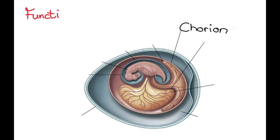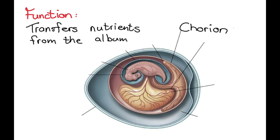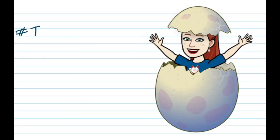And then lastly we have the chorion, and the chorion's function is to transfer nutrients from the albumin to the embryo. Thank you for visiting the chaotic classroom. See you next time.